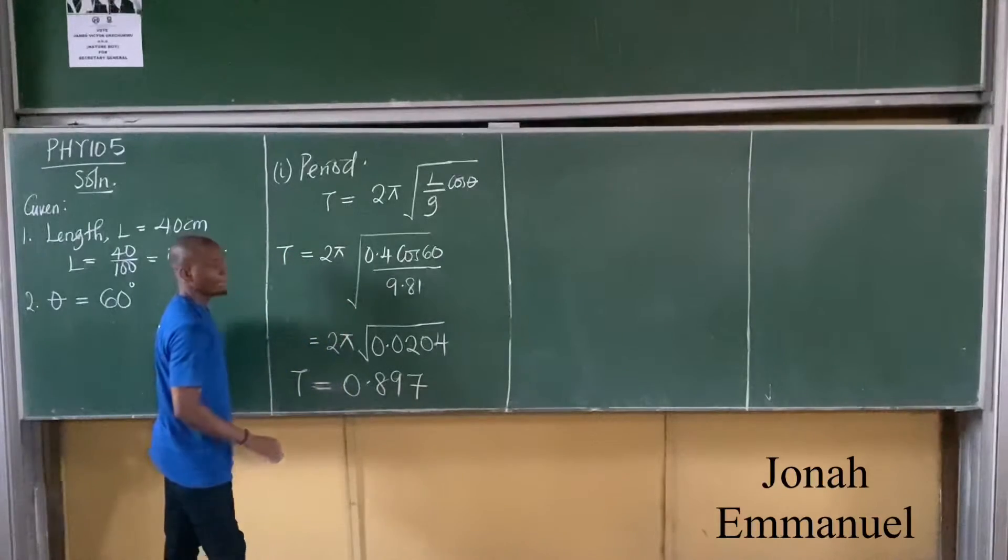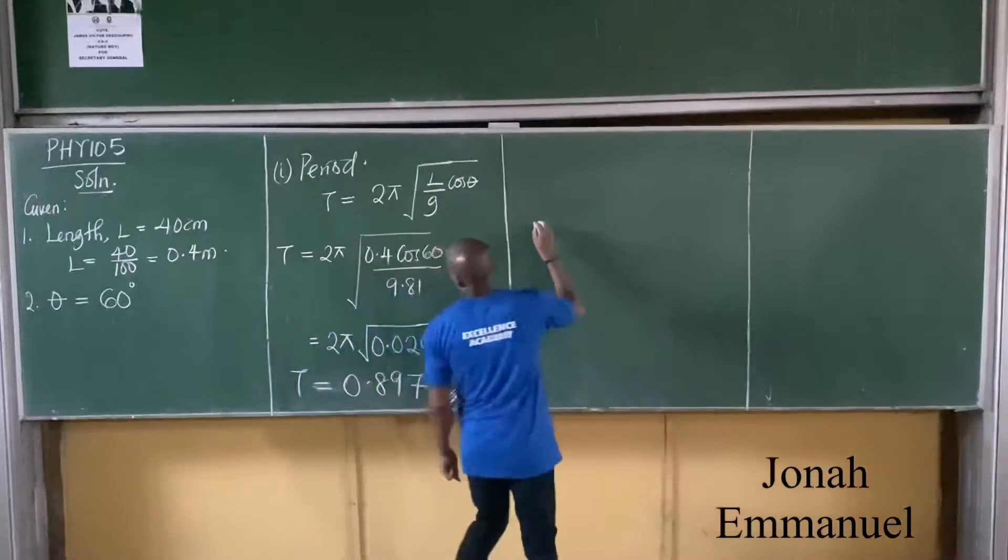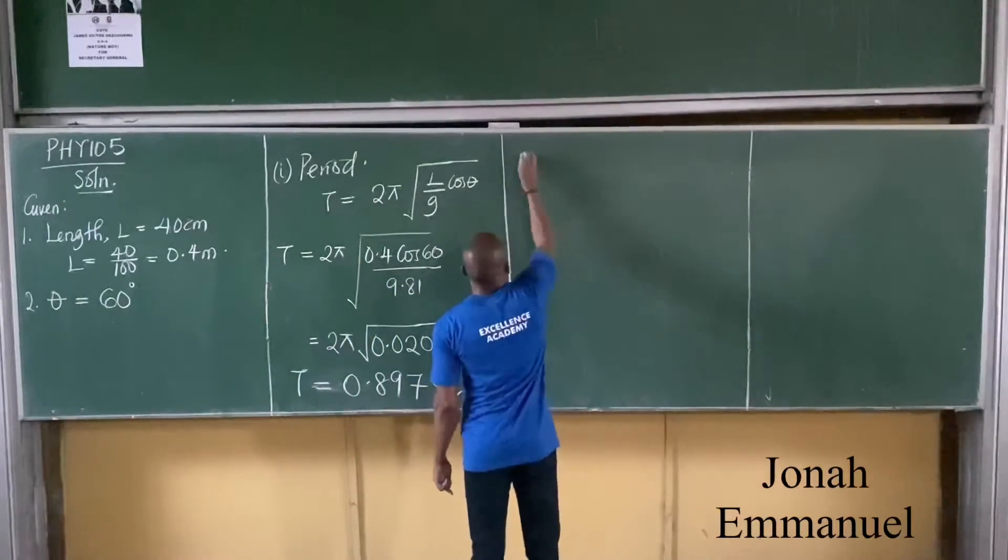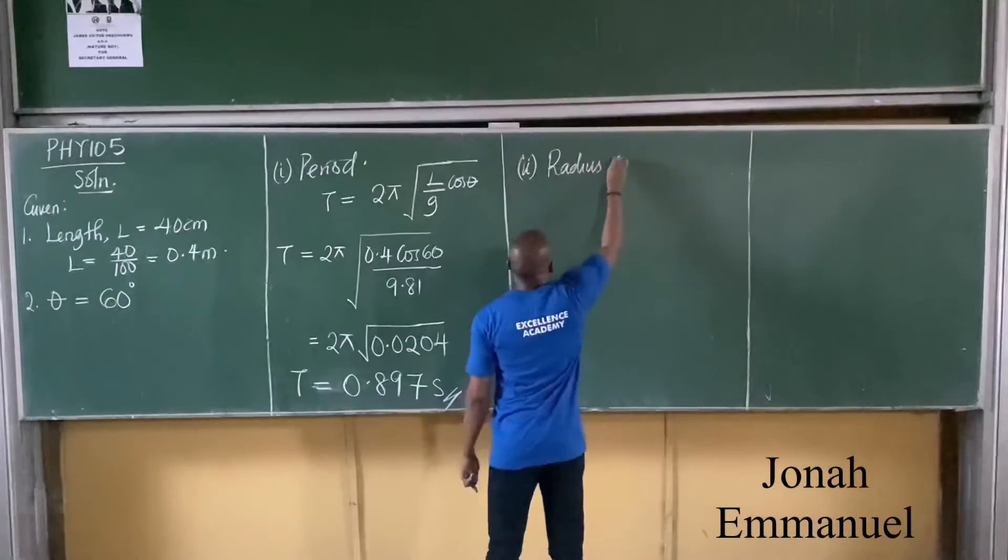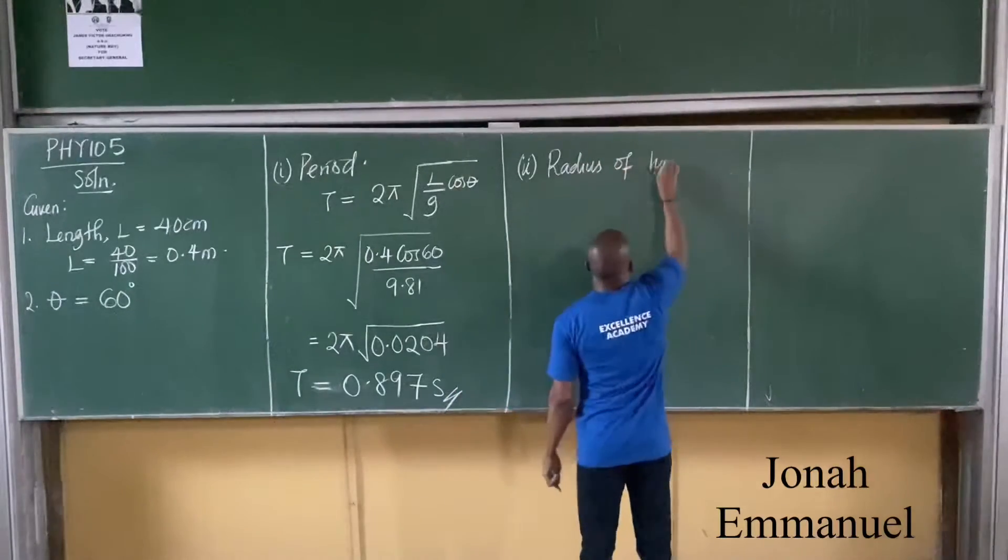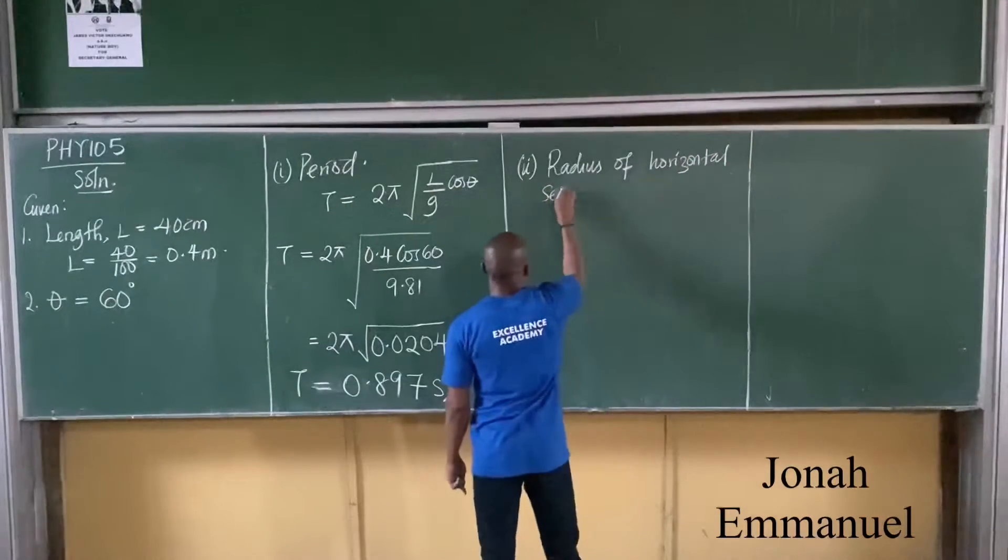Units: seconds. That's all. The second part is find the radius of horizontal sector.